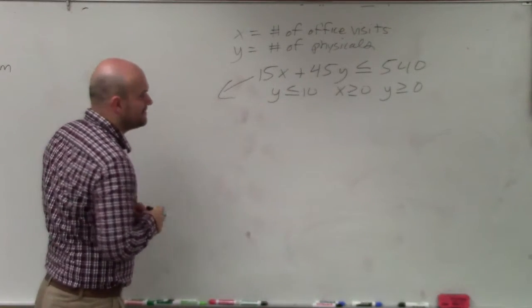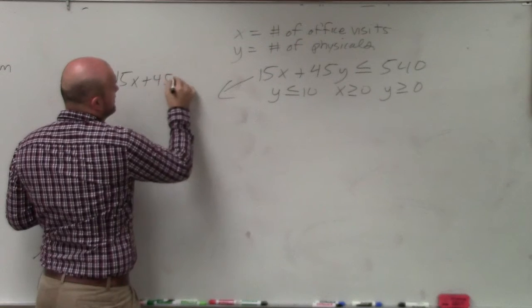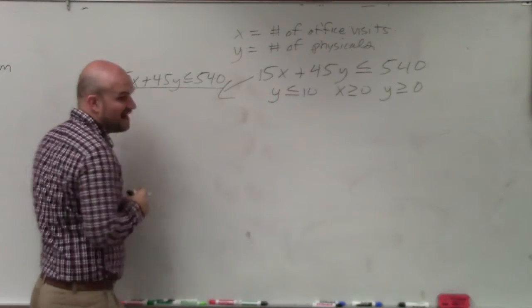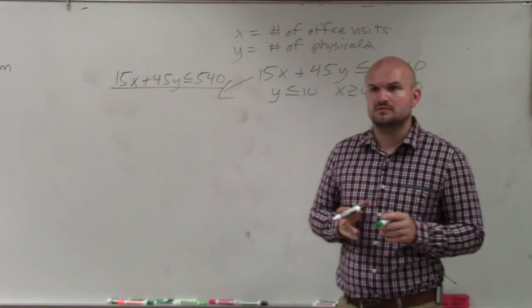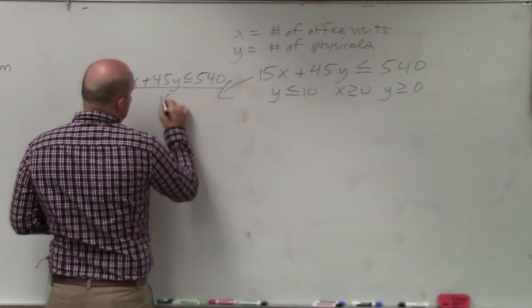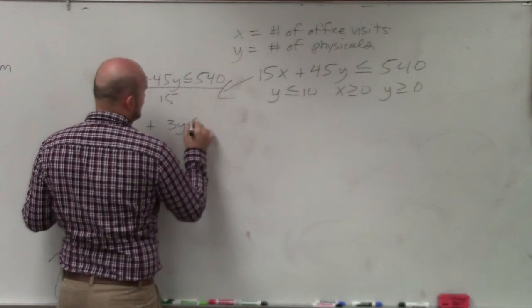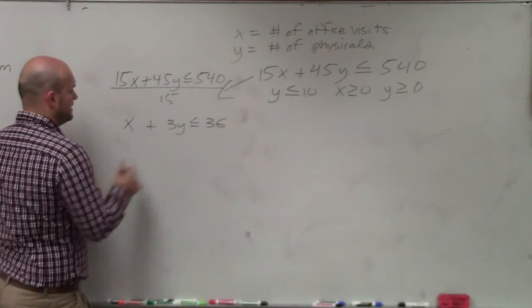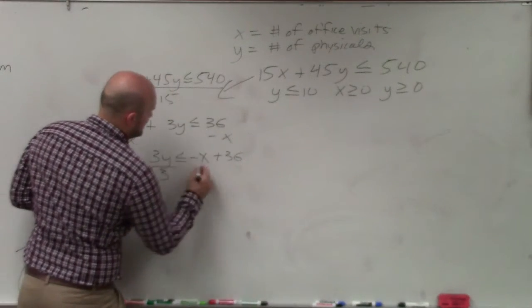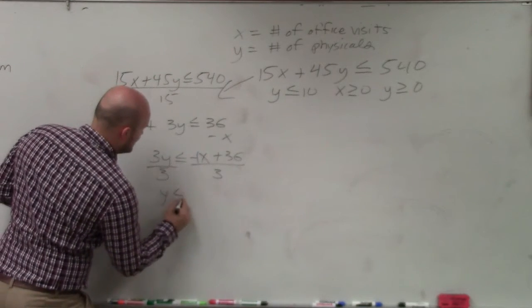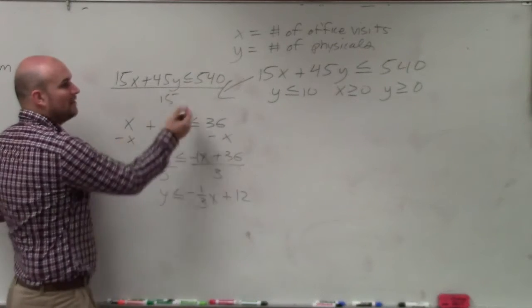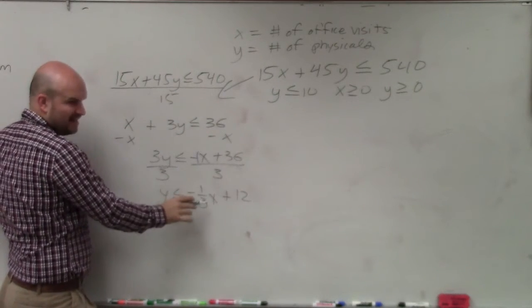So now, the hard part is I need to go ahead and graph this. So the first thing I'd do is 15x plus 45y is less than or equal to 540. First thing I would do is see if I could divide out a 15 or at least a 5. If I divide everything out by 15, I have x plus 3y is less than or equal to 36. Then I can subtract an x. I have 3y is less than or equal to negative x plus 36. Divide by 3. y is less than or equal to negative 1/3 x plus 12. That's not that bad, right?